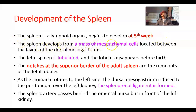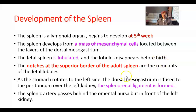The spleen develops from a mass of mesenchymal cells located between the layers of the dorsal mesogastrium. Mesenchyme means embryonic connective tissue. The fetal spleen is lobulated and the lobules disappear before birth. The notches at the superior border of the adult spleen are the remnants of the fetal splenic lobules.